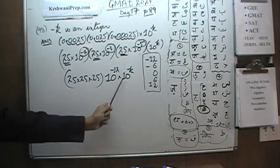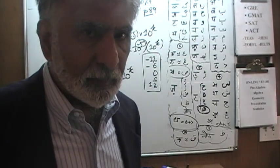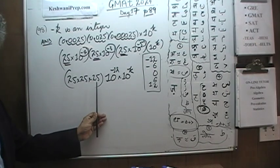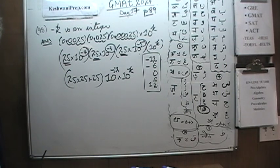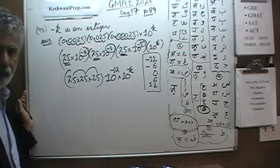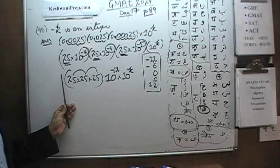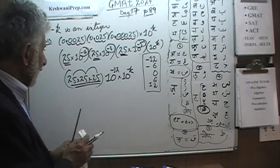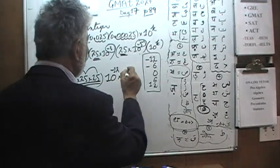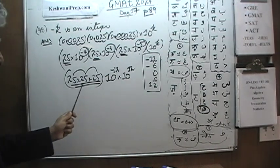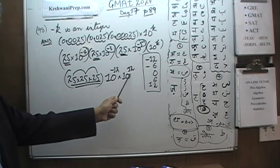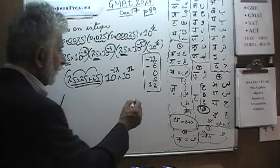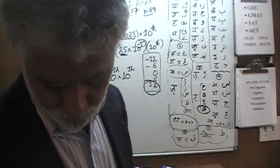What is the smallest value of K that makes this an integer? We have 25 times 25 times 25 multiplied by 10 to the negative 12 times 10 to the K. We don't need to compute 25 times 25 times 25 exactly — what we need to understand is that it ends in a 5, because 5 times 5 ends in 5. It is not a multiple of 10, so it is already an integer. Therefore, the smallest value of K is 12. Positive 12 cancels negative 12, and we end up with an integer. Note that the smallest value of K happens to be the largest value among the answer choices.